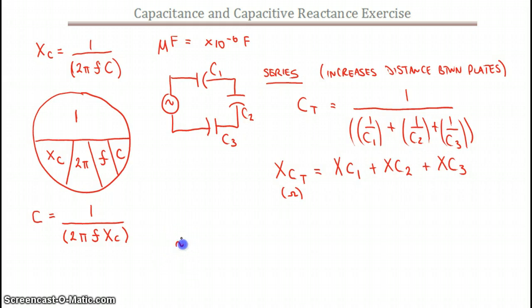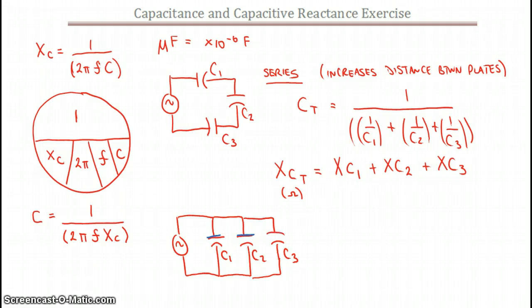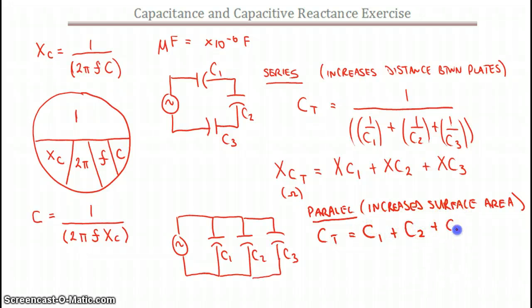If we look at the parallel connection with three capacitors — C1, C2, and C3 — effectively we have now created a much larger capacitor. The surface area on each of those capacitors is going to add together, so we're going to have more surface area, which means we're effectively going to have a larger capacitor. So for parallel, we have increased the surface area, which gives us a larger capacitor. Our total capacitance is going to be C1 plus C2 plus C3.